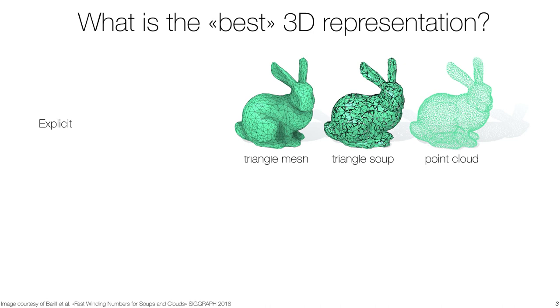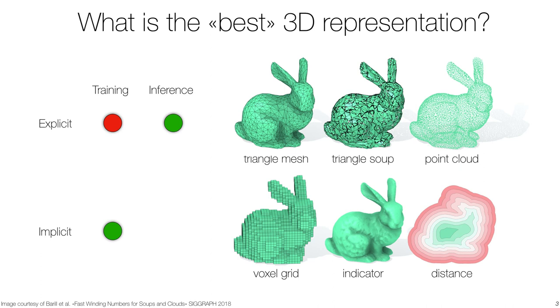When using traditional explicit representations, the inference phase is straightforward, but training requires careful treatment. When using implicit representations, training is cast as a standard classification task, but surfaces need to be extracted by marching cubes.